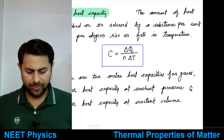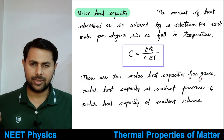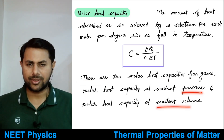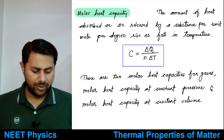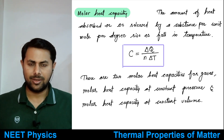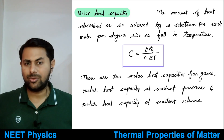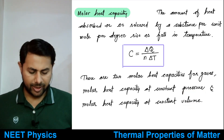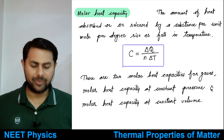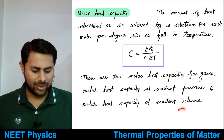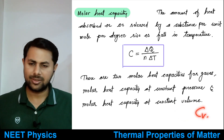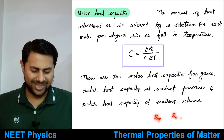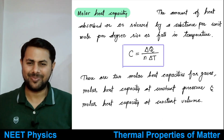For solids and liquids, there is only one molar heat capacity. For gases, there are two different molar heat capacities because the behavior of gases is completely different at constant pressure and constant volume. So there is Cp — molar heat capacity at constant pressure — and Cv — molar heat capacity at constant volume. Similarly, there are specific heat capacities Sp and Sv for gases.